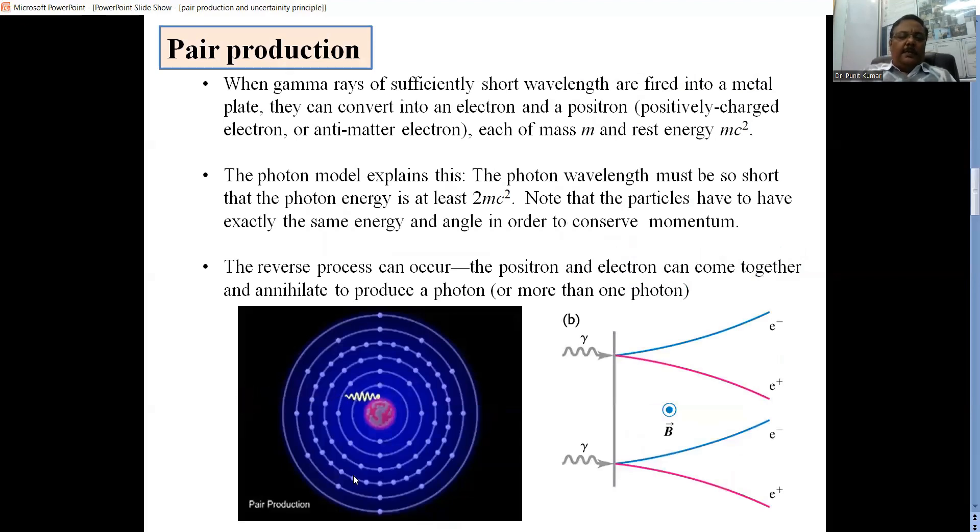There is another effect called pair production. When a gamma-ray photon strikes a metal, two particles, an electron and a positron are emitted. The emission of this pair of electron and positron, the electron and its antiparticle positron, is called pair production.